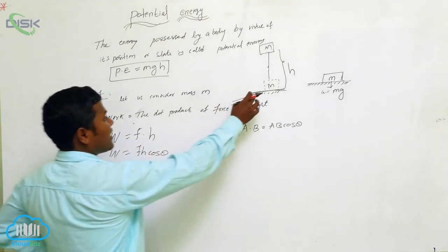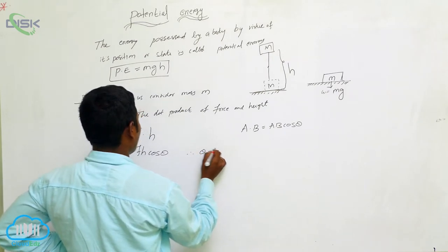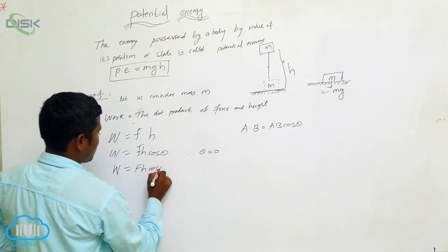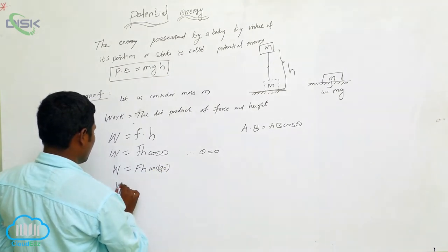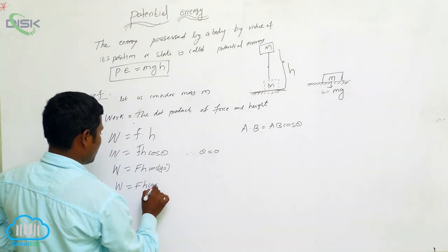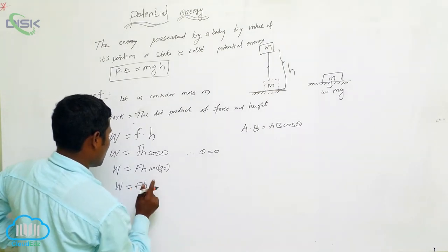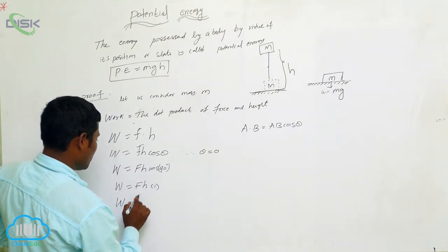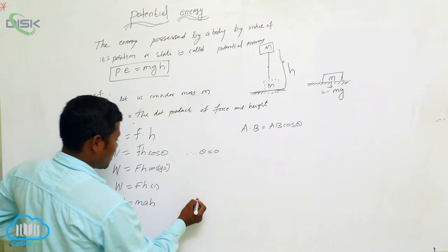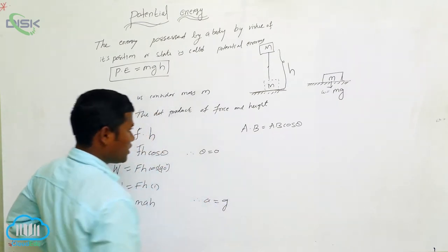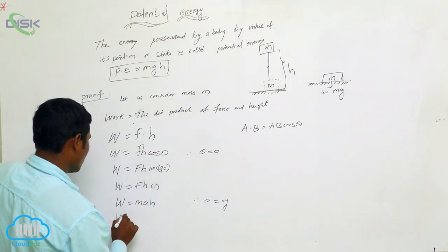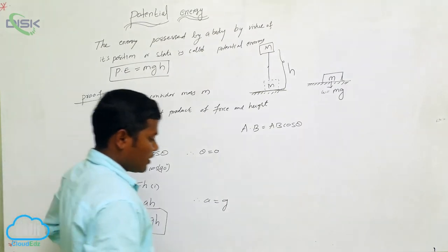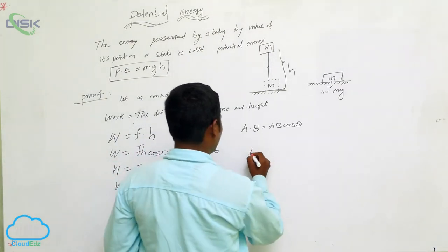We already know the dot product from vectors: A dot B equals AB cos theta. So W equals F times H times cos theta. Is there any angle between them? No. Theta equals zero, so cos zero equals one. Then W equals F times H. According to Newton's law, force equals MA, and here A equals G because gravity is pulling it to the ground. So W equals MGH.